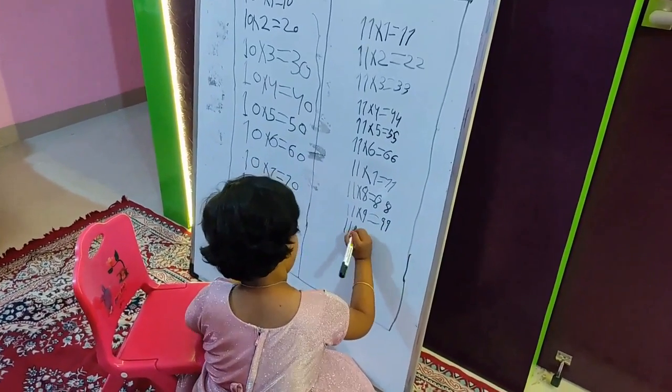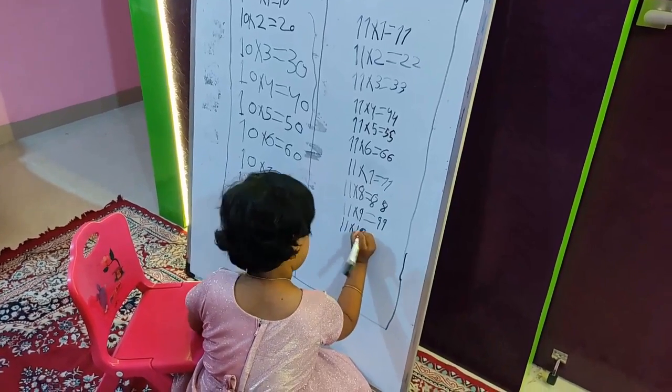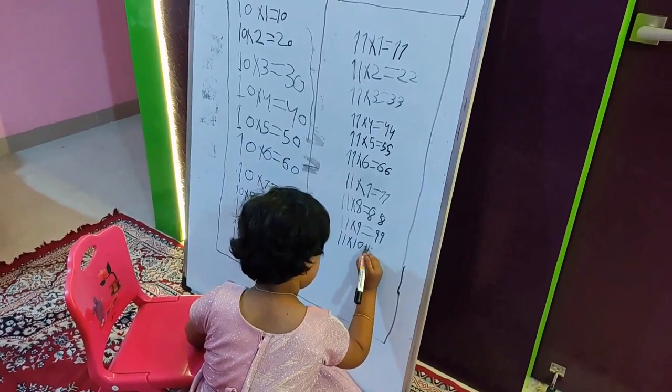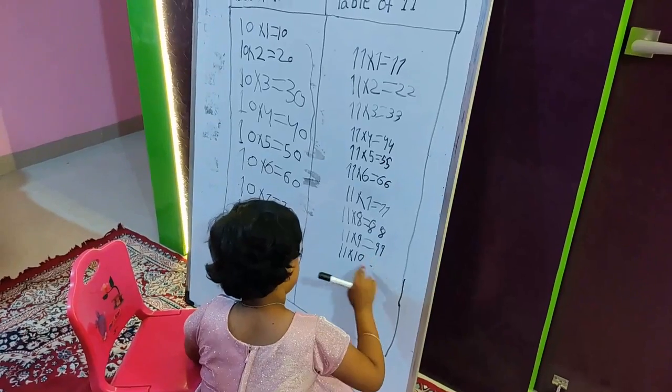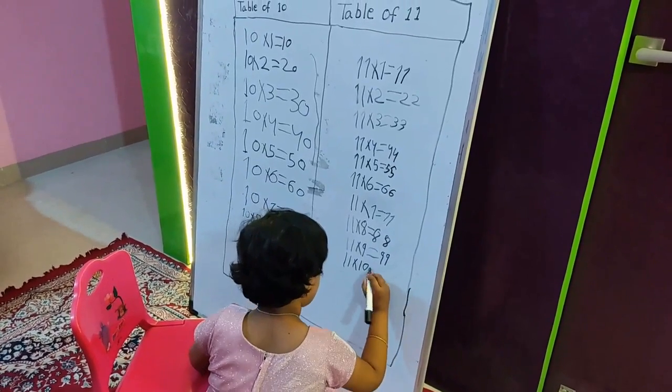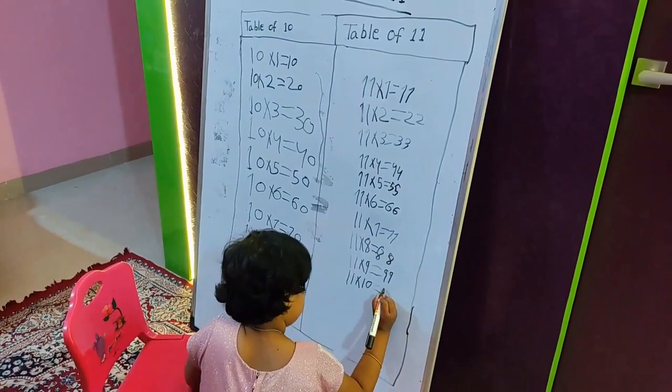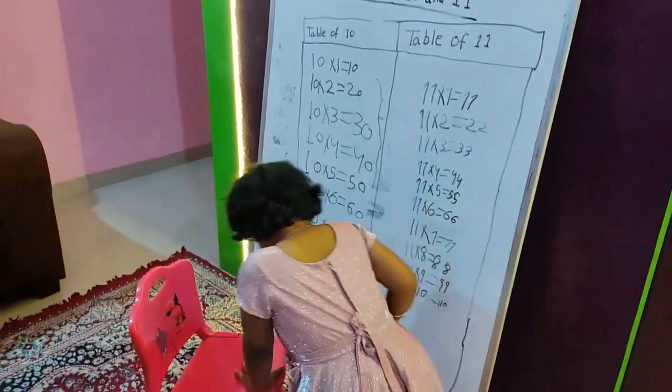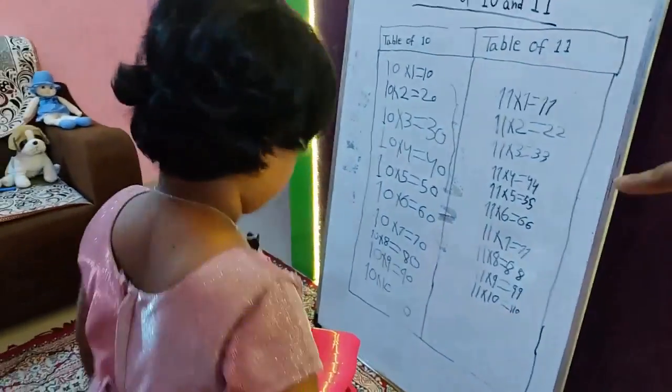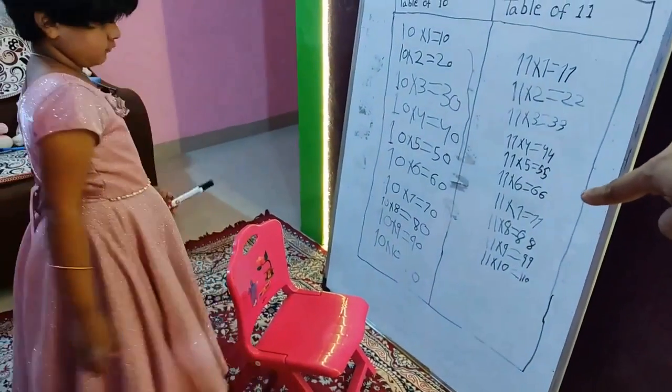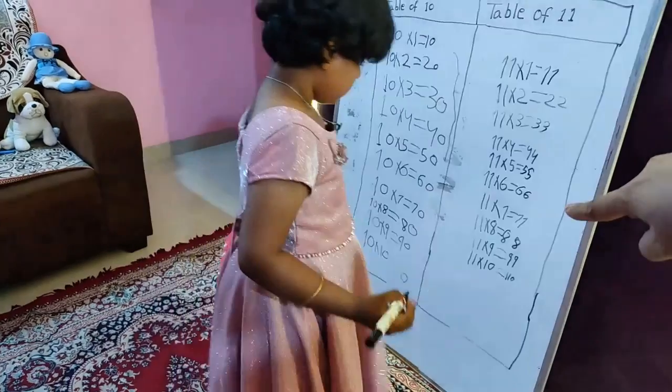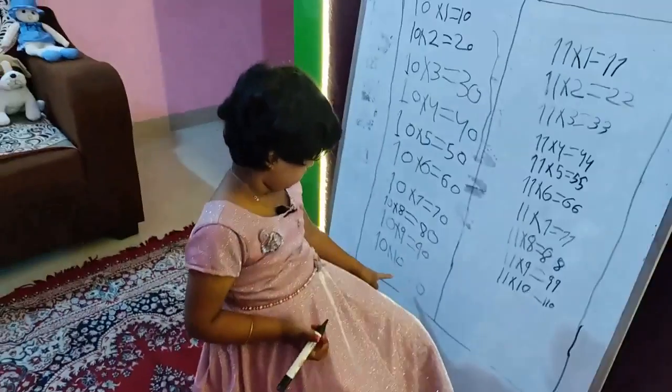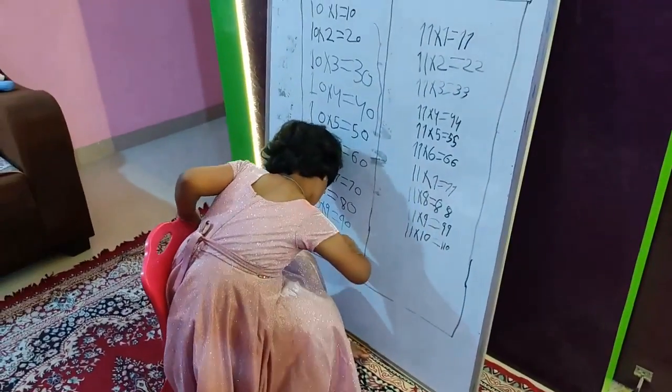Eleven multiply ten equals. Equal, equal, equal. Eleven times ten, one hundred ten, ten, ten. One hundred.